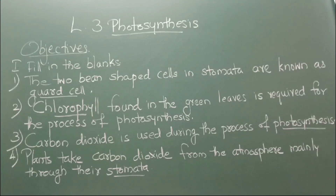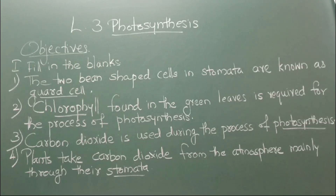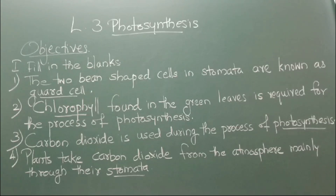Number 3: Carbon dioxide is used during the process of blank. The answer is photosynthesis. Number 4: Plants take carbon dioxide from the atmosphere mainly through their blank. The answer is stomata.